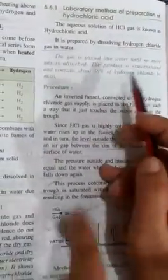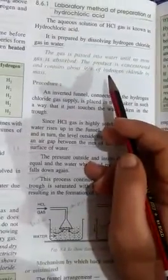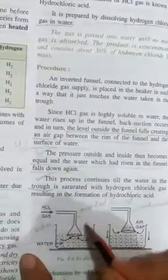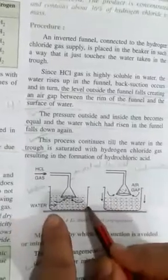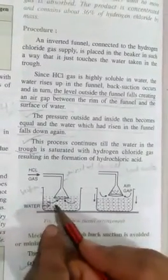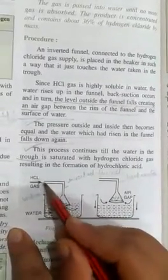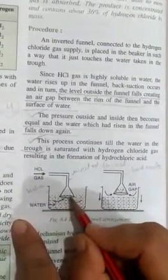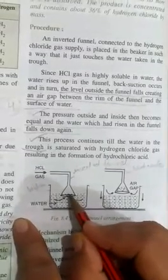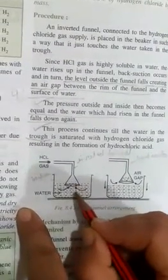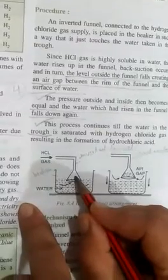In the laboratory, we can see this apparatus. Here is a container containing water and this is the delivery tube. This is the funnel. Through this delivery tube, hydrogen gas is coming and this funnel is dipped in the water.